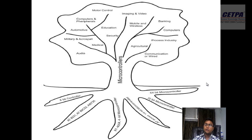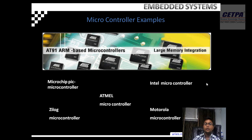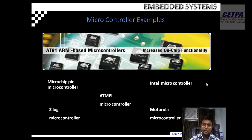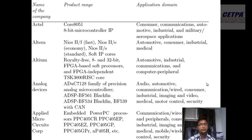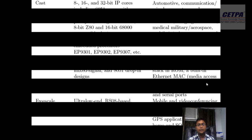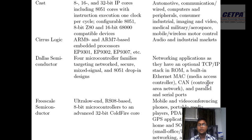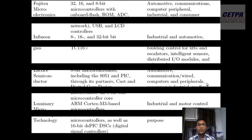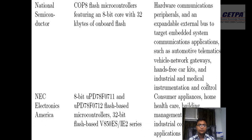If I talk about the companies producing microcontrollers, we can see a list including Microchip, Intel, Atmel, Zilog, Motorola and many more. A detailed list of companies producing different types of microcontrollers includes Actel, Altera, Altium, Analog Devices, Applied Micro Circuits, Atmel, Cast, Zilogic, Digi Semiconductor, and Freescale. All of these companies are producing a wide range of microcontrollers used in different specific applications.